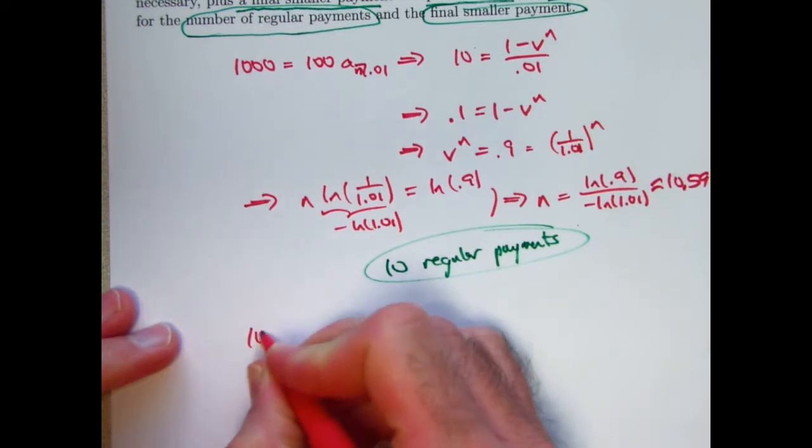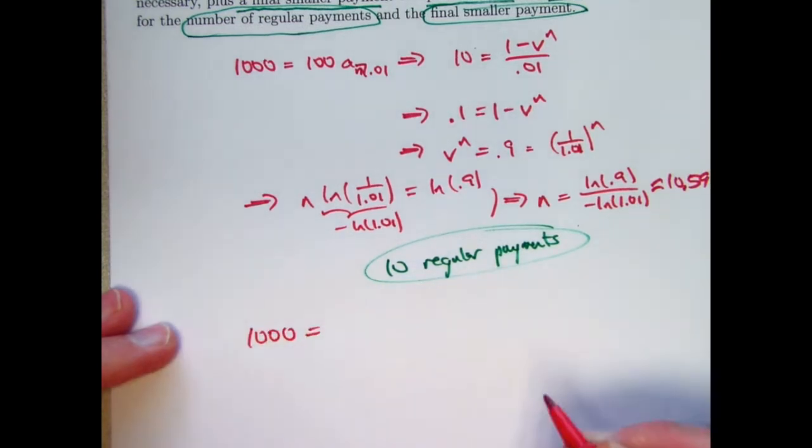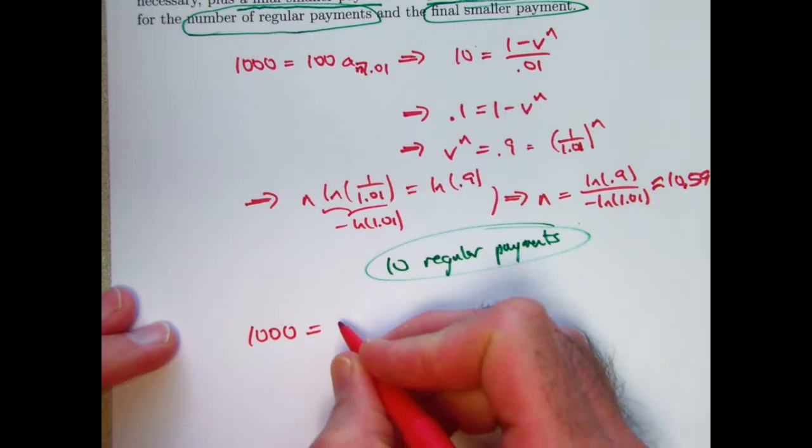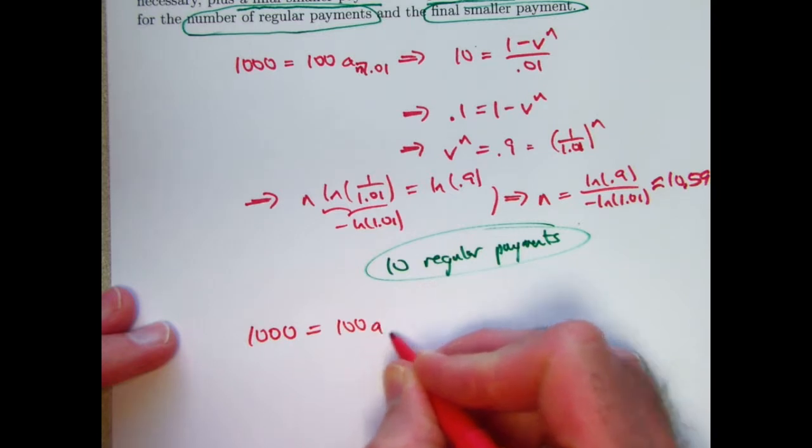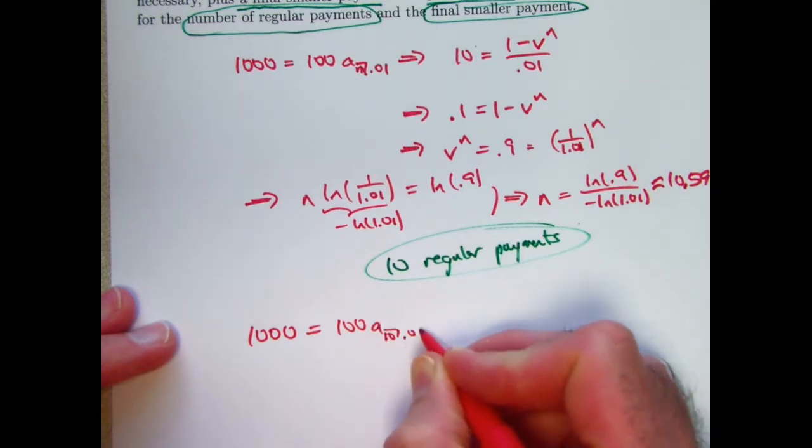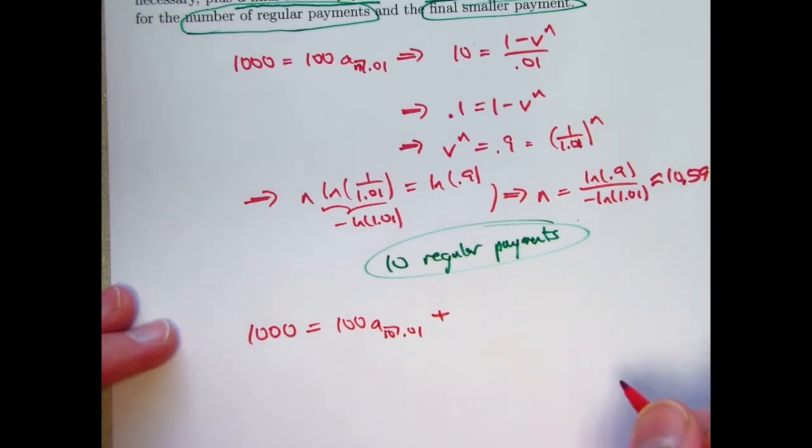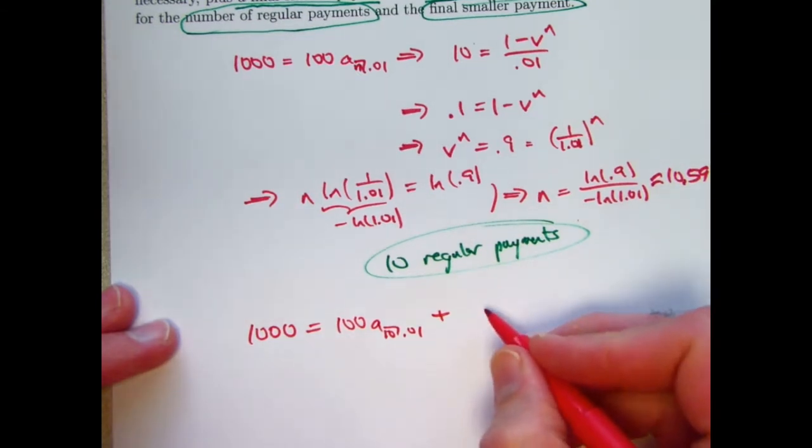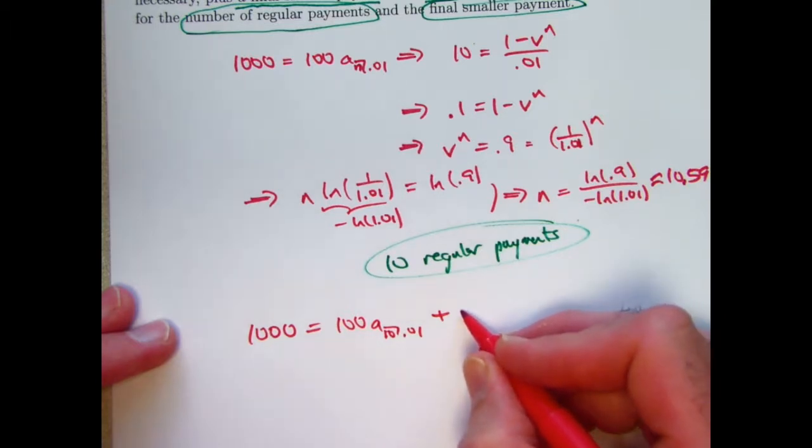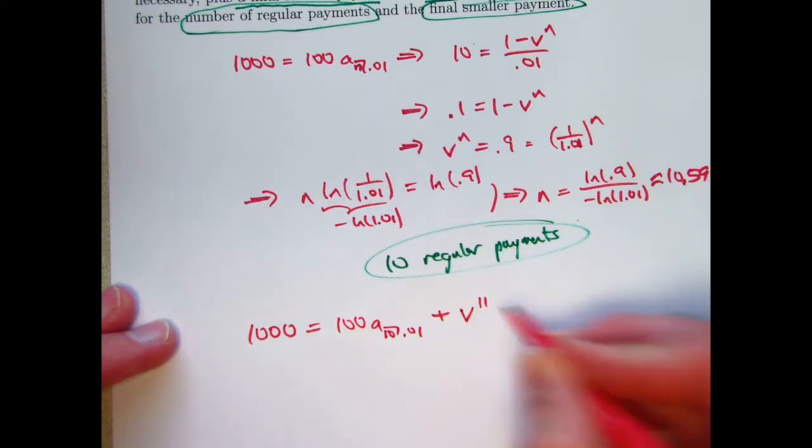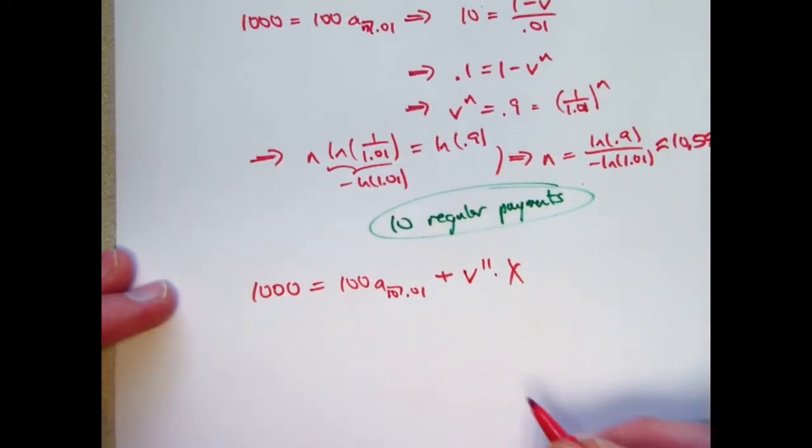We can go back to the original present value equation and change it to be based on what we found for n here: 1,000 equals 100 a sub 10 at 0.01 using 10 regular payments plus the discounted value of our last payment at time 11. It would need to go back in time by 11 periods, so we need to multiply it by v to the 11th. Solve this equation for x.